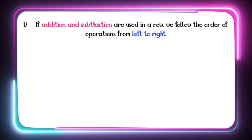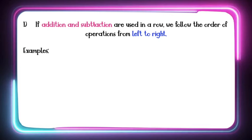This is the first rule: if addition and subtraction are used in a row, we follow the order of operations from left to right. Again, children, if addition and subtraction are used in a row, we follow the order of operations from left to right. So let's have the examples.